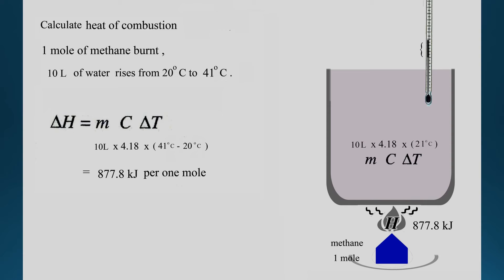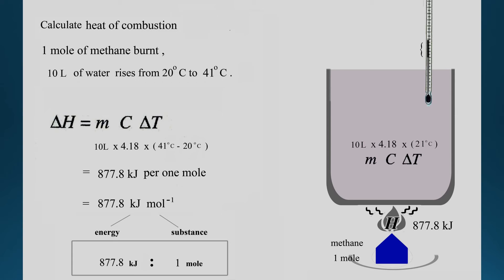Keep in mind the unit: kilojoules per mole. Be careful — there are two parts. One part is the heat energy, which is 877.8 kilojoules. The other part is the substance of fuel — the methane you are burning, which is one mole. That is what kilojoules per mole means.